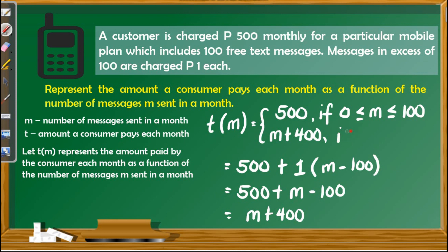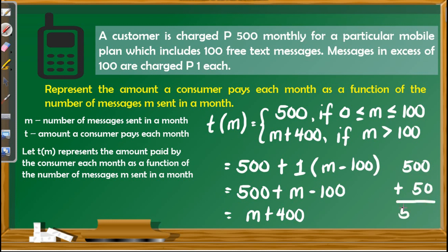The condition for the second function is if the number of messages M is greater than 100. To verify: if you send 150 messages, then 150 plus 400 equals P550. Checking manually: P500 for the plan, plus 50 excess messages at P1 each equals P50, giving a total of P550. That confirms our function is correct.